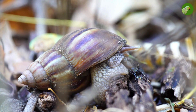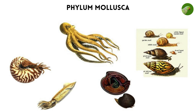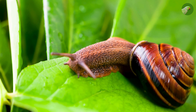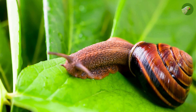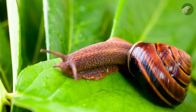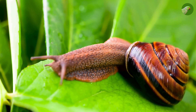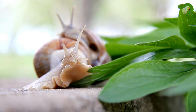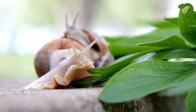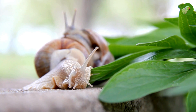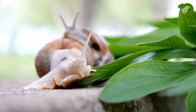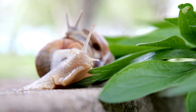Phylum Mollusca: Mollusks belong to the phylum Mollusca, which is one of the largest and most diverse phyla in the animal kingdom. The phylum includes approximately 100,000 living species, making it second only to the arthropods in terms of species richness. Mollusks are characterized by three main features: a mantle, a thin tissue that secretes the shell; a muscular foot used for various types of locomotion; and a radula, a tongue-like structure with tiny teeth used for feeding. They are found in marine, freshwater, and terrestrial environments, and their adaptability has allowed them to thrive in a wide range of ecological niches.